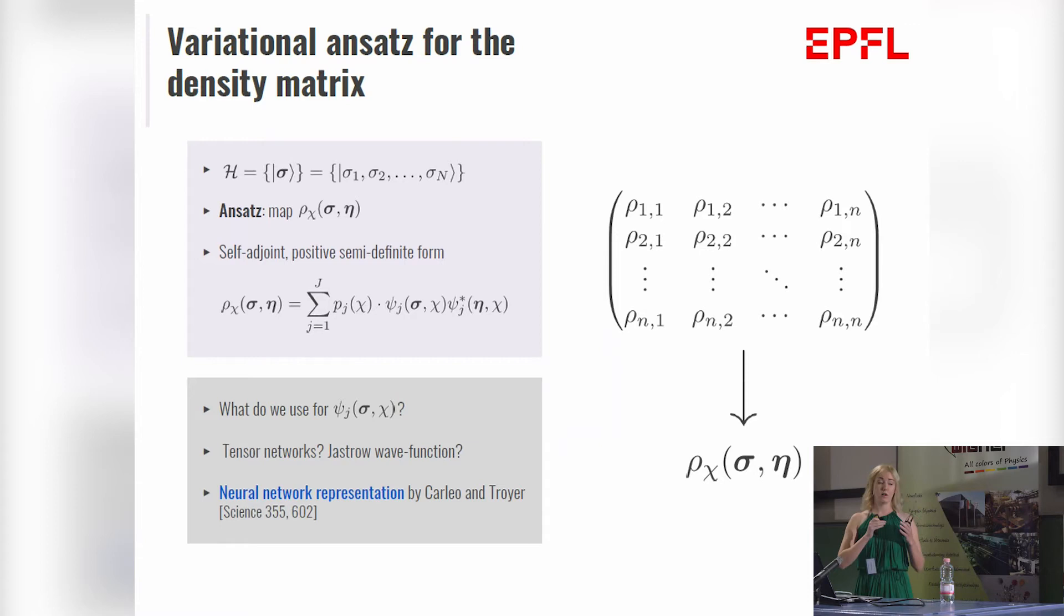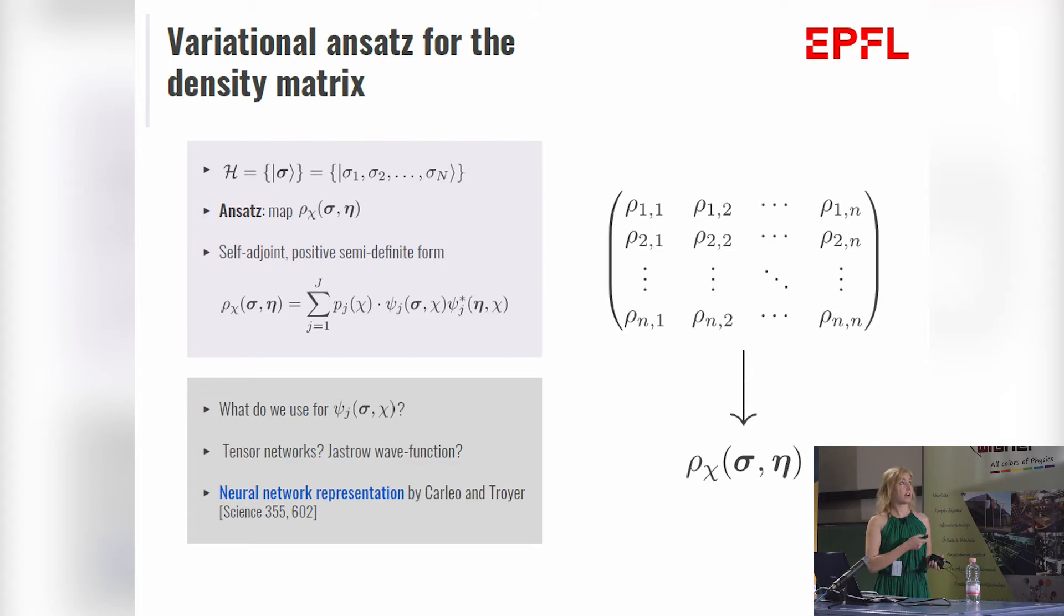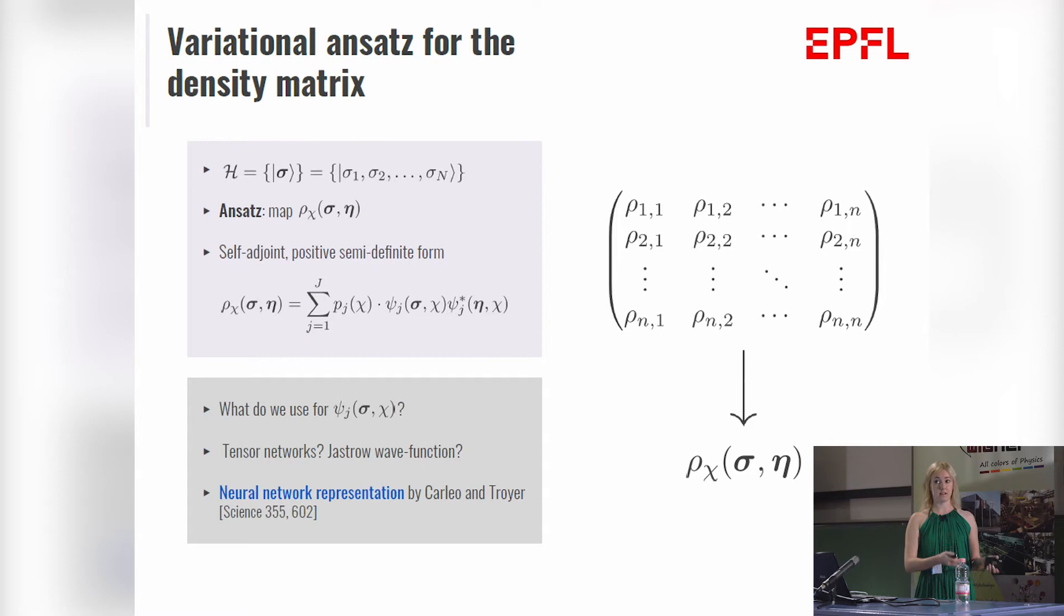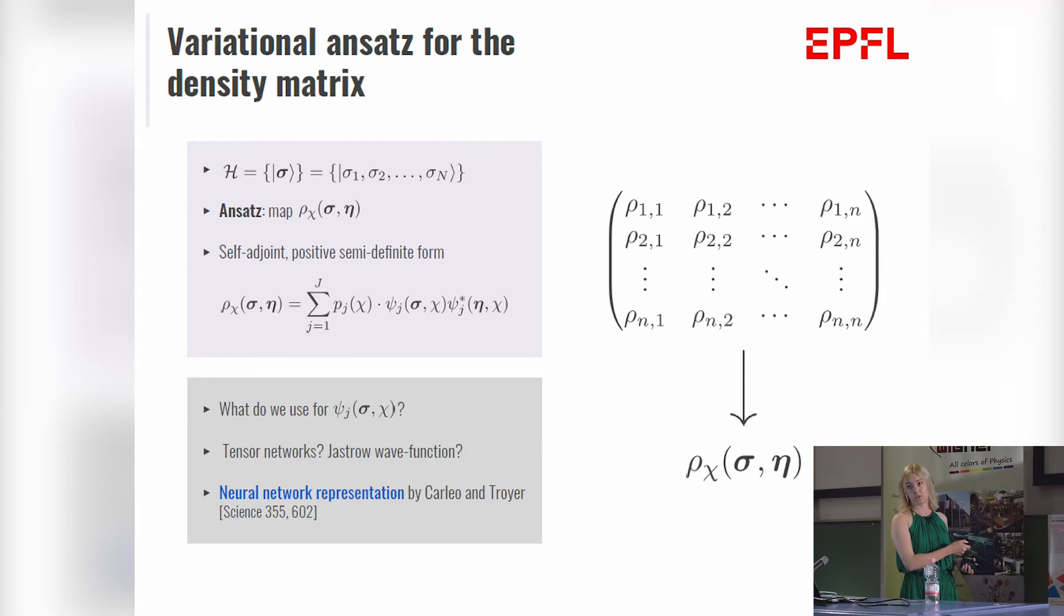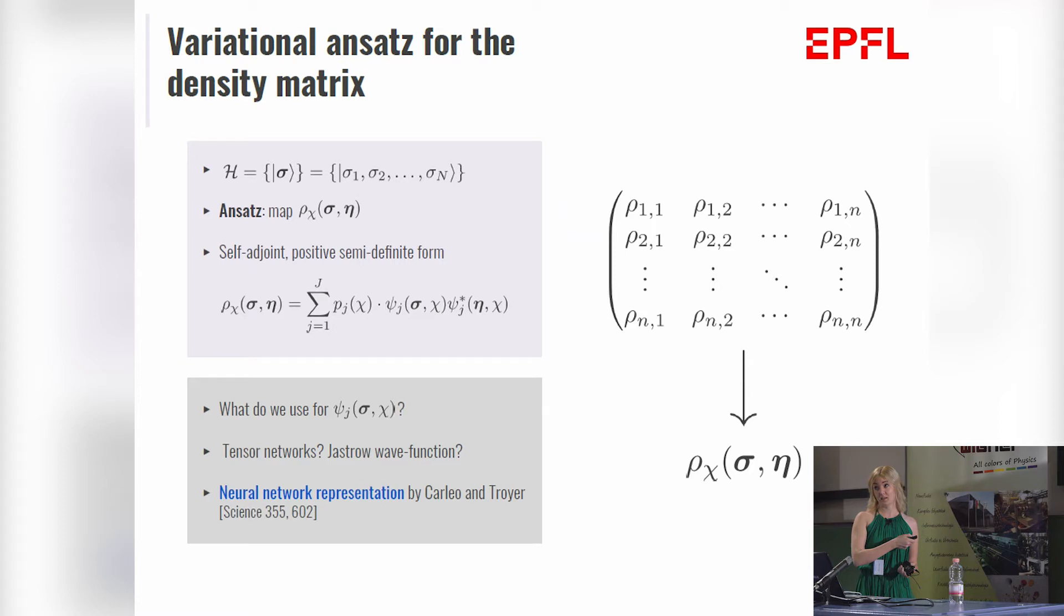The density operator is formally expressed as the density matrix, but we cannot store that. So what is our ansatz? Our ansatz is going to be a function, a map with key variational parameters, which given two input-based states will give us a density matrix element. We also have to have this ansatz give us physical solutions, so it has to be Hermitian and positive semi-definite. A general formula to achieve positive semi-definiteness is if we prepare the density matrix as a statistical mixture. And then the only question remains, how will we represent these wave functions?